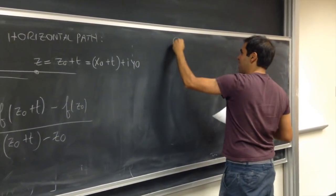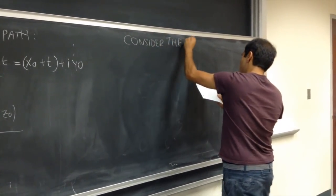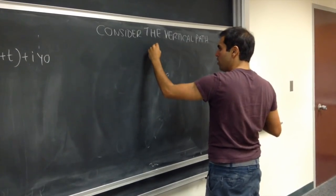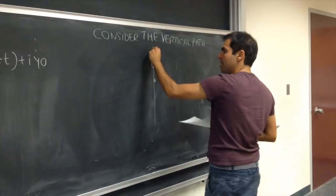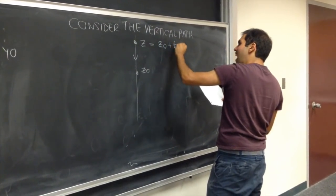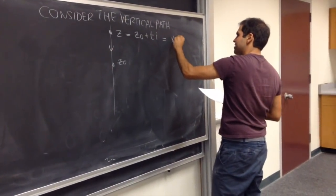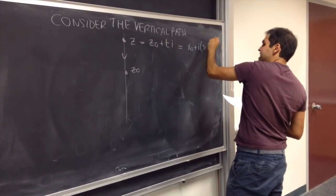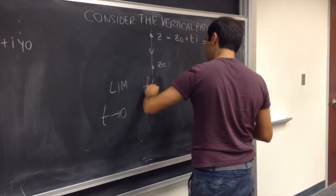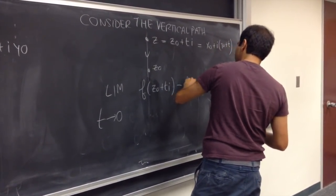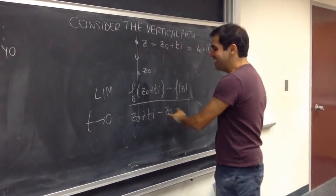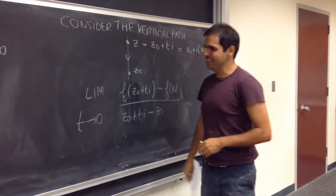On the other hand, you can also consider the vertical path. Namely, if you have the point z-naught, you can approach it going vertically. In other words, consider a point z equals z-naught plus ti, where t is a real number — that's x-naught plus i times y-naught plus t. And if you do that, you get limit t goes to zero of f of z-naught plus ti, minus f of z-naught, over z-naught plus ti minus z-naught.